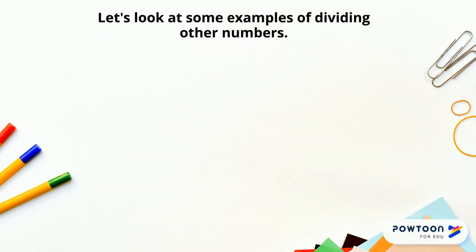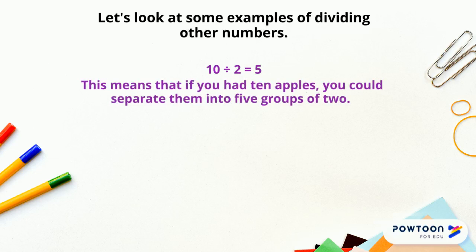Let's look at some examples of dividing other numbers. Ten divided by two is five. This means that if you had ten apples, you could separate them into five groups of two.